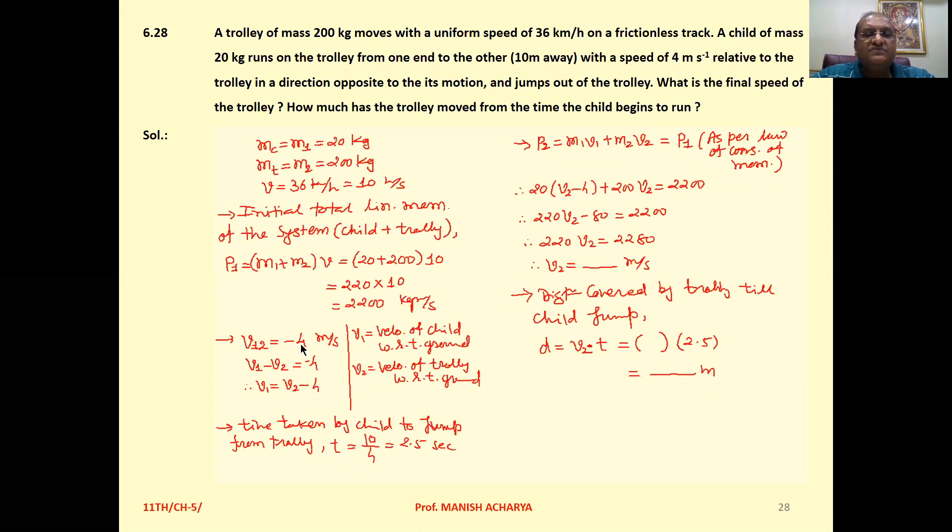Let V1 be the velocity of the child with respect to ground, and V2 be the velocity of the trolley with respect to ground. Then the relative velocity V12 = V1 - V2 = -4.